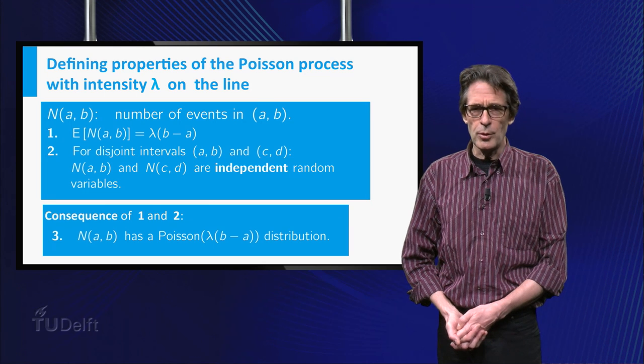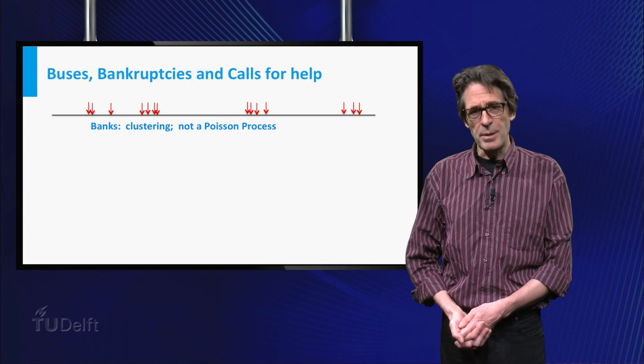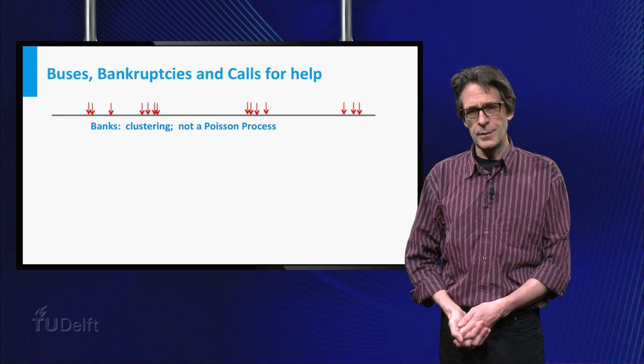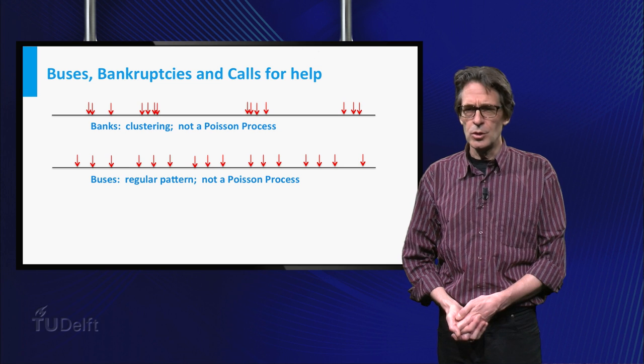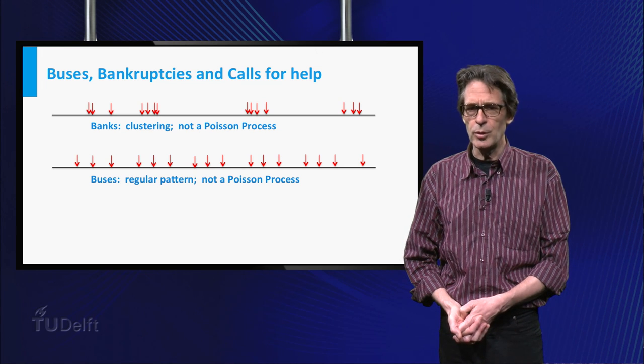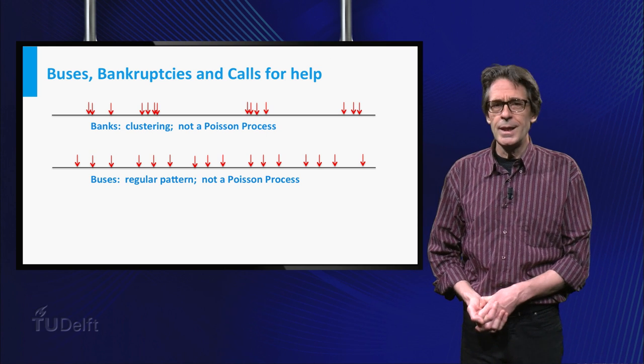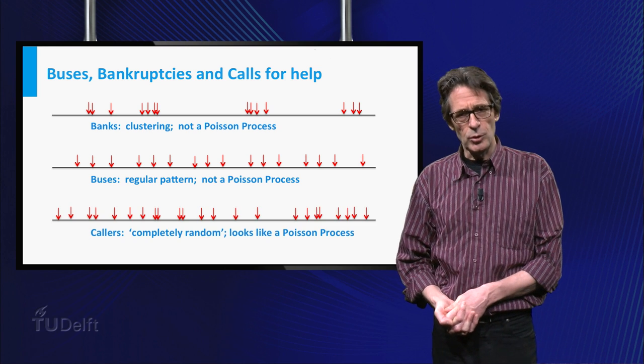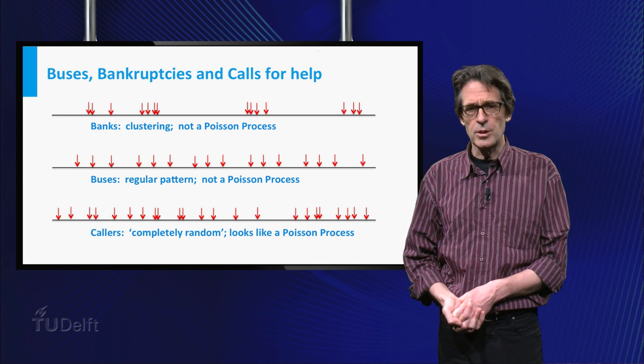For the three processes in the example, the bankruptcies will take place dependent of each other. And the buses arrive according to some schedule. So for those two cases the Poisson process will not be a good description. However, the incoming calls from many potential customers, acting independently, will behave more or less as a Poisson process.